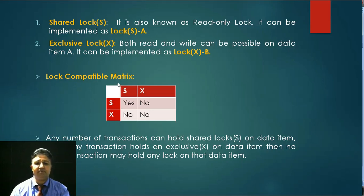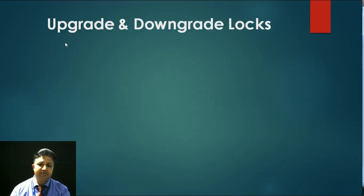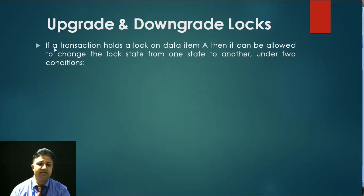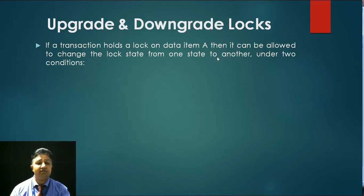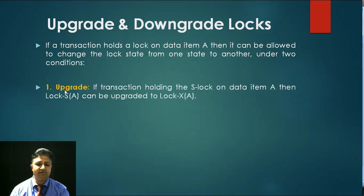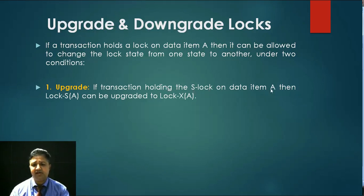This is called the lock compatible matrix. Next, there are two more types of locks: number one is called upgrade lock, and number two is called downgrade lock. Before explaining these, let us understand with a definition: if a transaction holds a lock on a data item A — whether a shared lock or an exclusive lock — it can be allowed to change the lock from one state to another using two conditions: upgrade and downgrade.